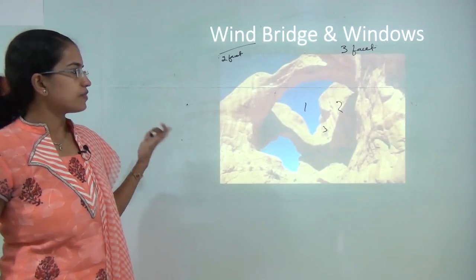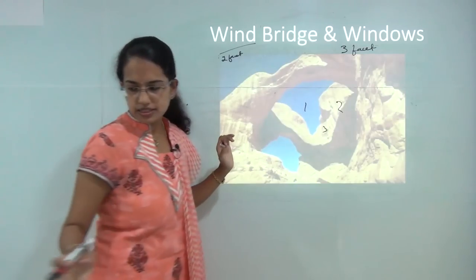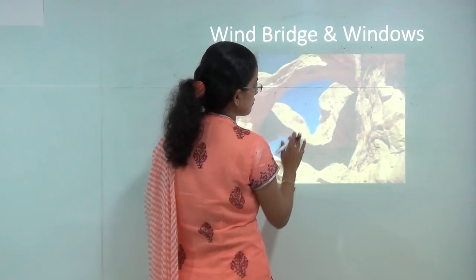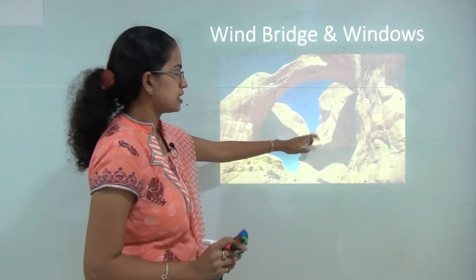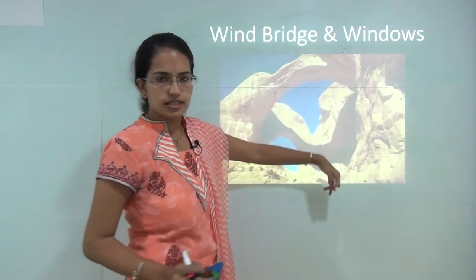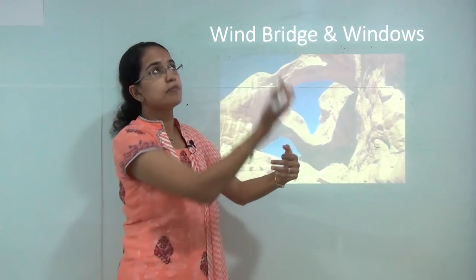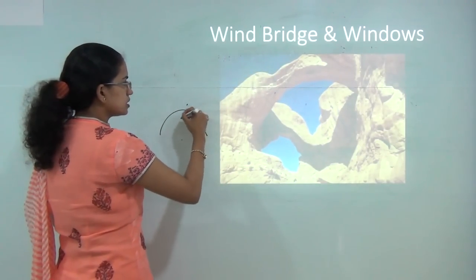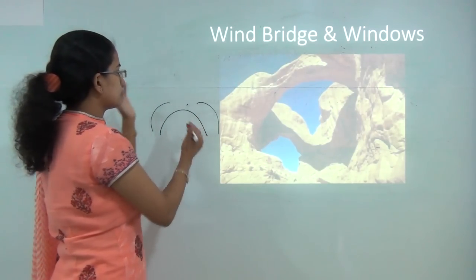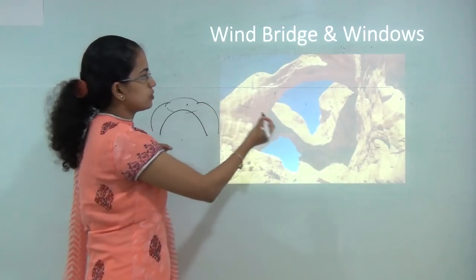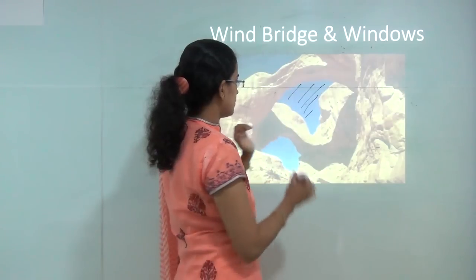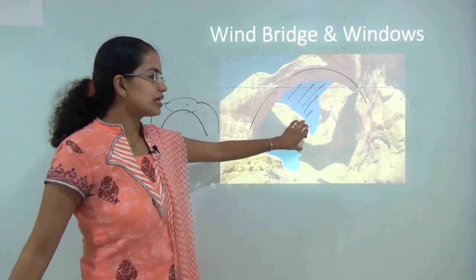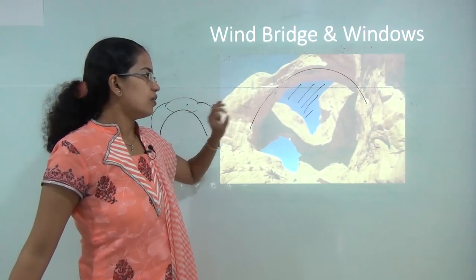The next is wind bridges and wind windows. As seen in the diagram from the Arches and Canyonlands National Park in the United States, you can see bridges that are formed and windows that open towards the sky. You have multiple bridges forming and from each bridge there is an opening towards the horizon — that is known as a window. This is a rarely seen desert phenomenon found in very few deserts, and is again a result of differential erosion.